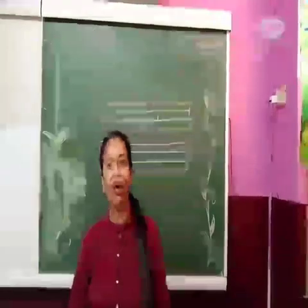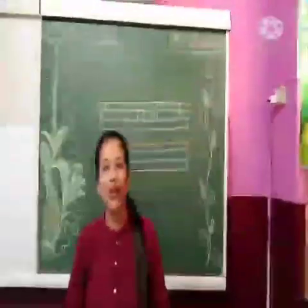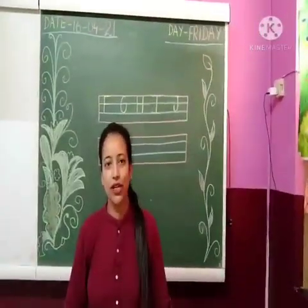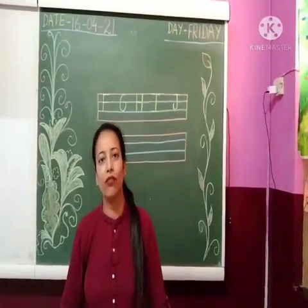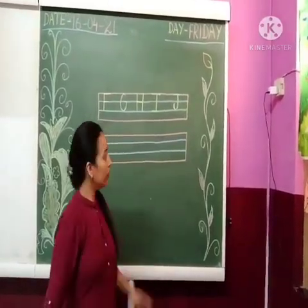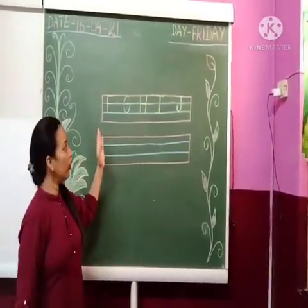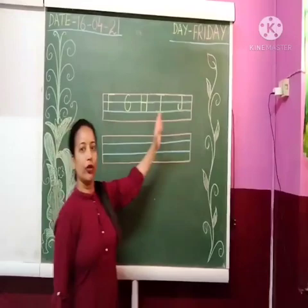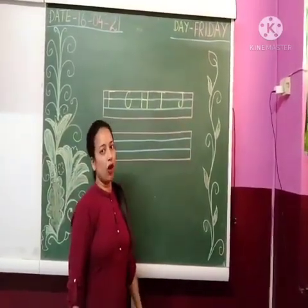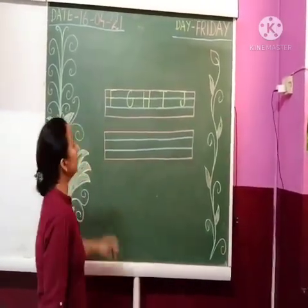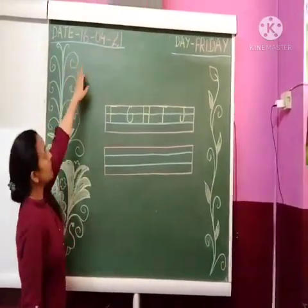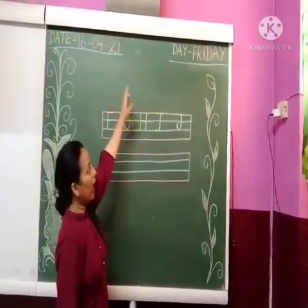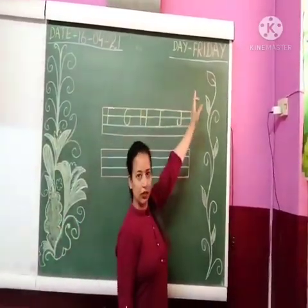Hello everyone, how are you all? Hope all are fit and fine at home. So children, today we will practice on the board alphabets F to J. First of all, we put today's date: 16th April 2021, and the day is Friday.